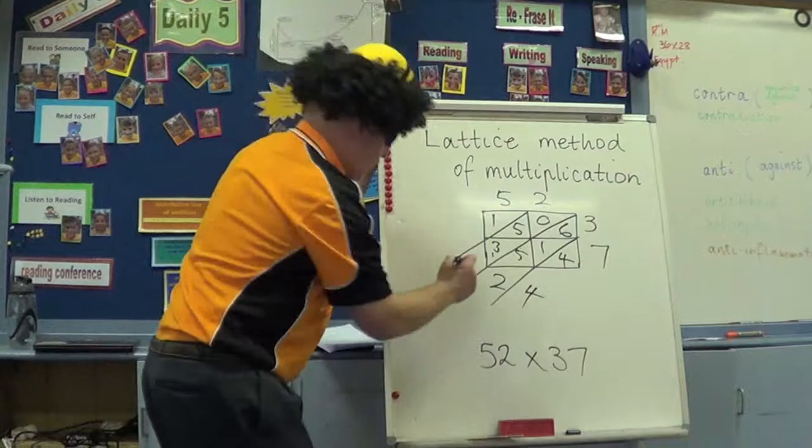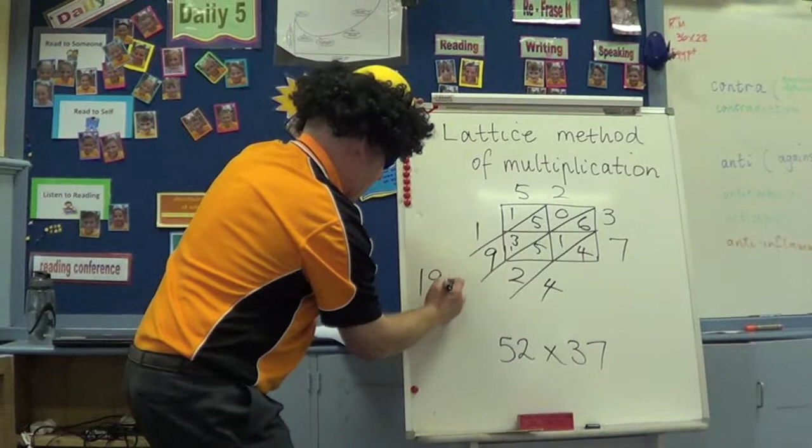There's our answer. 1,924. Come on! That's it. Just for the lattice method of multiplication, give it a try at home. It's a lot of fun.